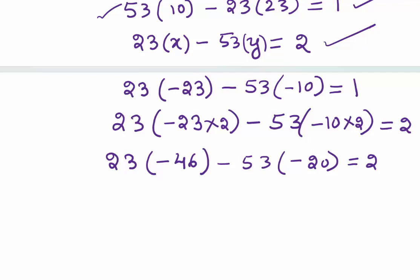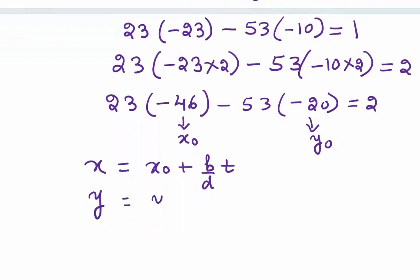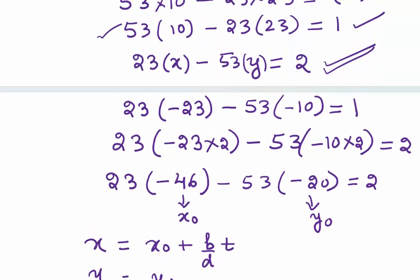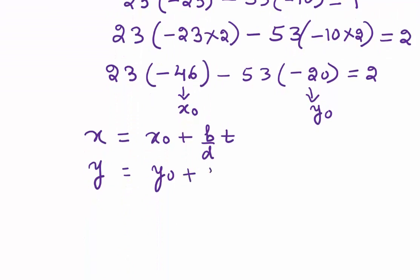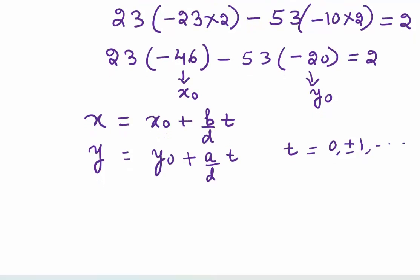To write the general solution, this is nothing but the initial solution x0, y0, if you compare it to your original equation. What is the general solution? General solution will be x = x0 + (b/d)t, and y = y0 + (a/d)t, where t values can be 0, ±1, ±2, ...